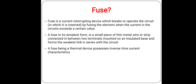The fuse forms the weakest link in series with the circuit. It is the cheapest, simplest, and oldest protective device used under overload or short circuit conditions. Being a thermal device, it possesses inverse time-current characteristics, meaning the operating time decreases as the fault current increases. It is economical as it does not require relays or instrument transformers, and it is reliable.